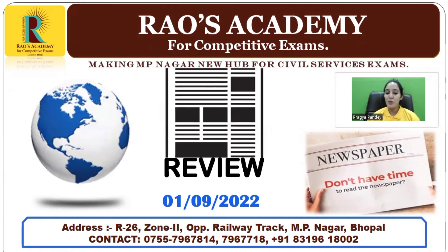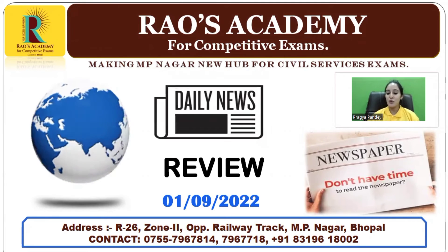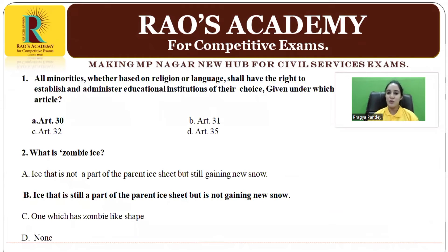In our previous video, I asked a few questions and solutions for them are as follows. The first question was: all minorities, whether based on religion or language, shall have the right to establish and administer educational institutions of their own choice — given under which article? The correct answer is Article 30. What is zombie eyes? The correct answer is eyes that are still a part of the parent ice sheet but are not gaining new snow.